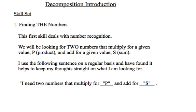I use the following sentence on a regular basis, and I've found it helps to keep my thoughts straight on what I'm looking for. It goes like this: I need two numbers that multiply for P and add for S, and you replace the P and the S with whatever the numbers might be.